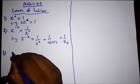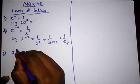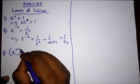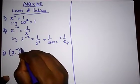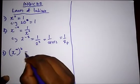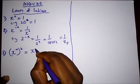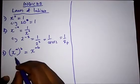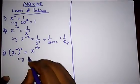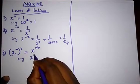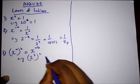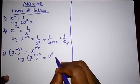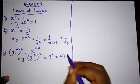Another law: when you have a number raised to a particular power a and all in brackets multiplied by another power b, you simply multiply the powers together. For example, two raised to the power three, all in brackets, raised to the power two, gives us two raised to the power six, which is 64.